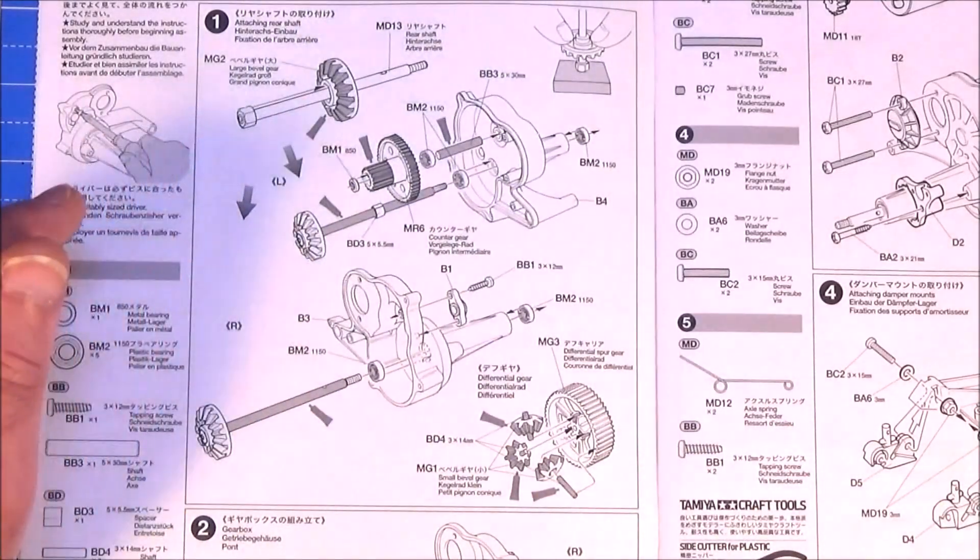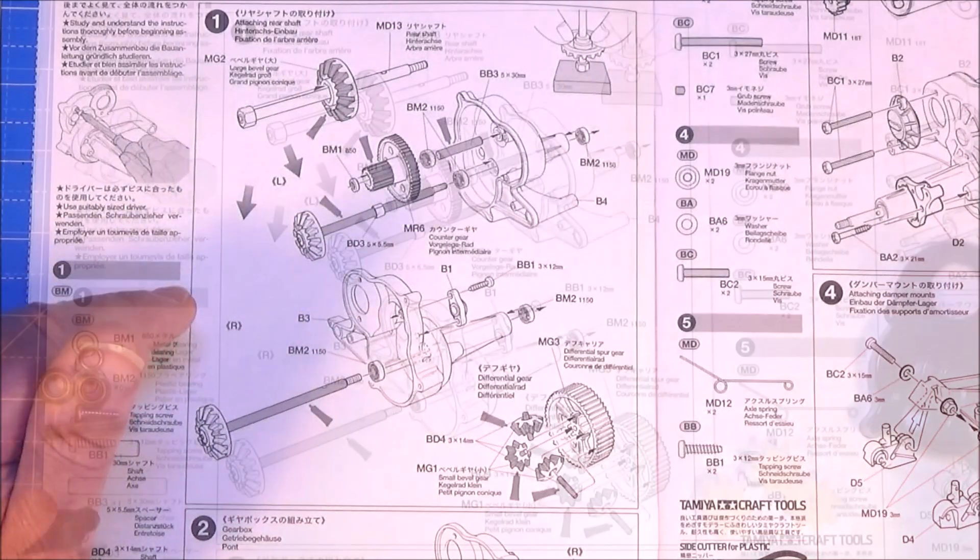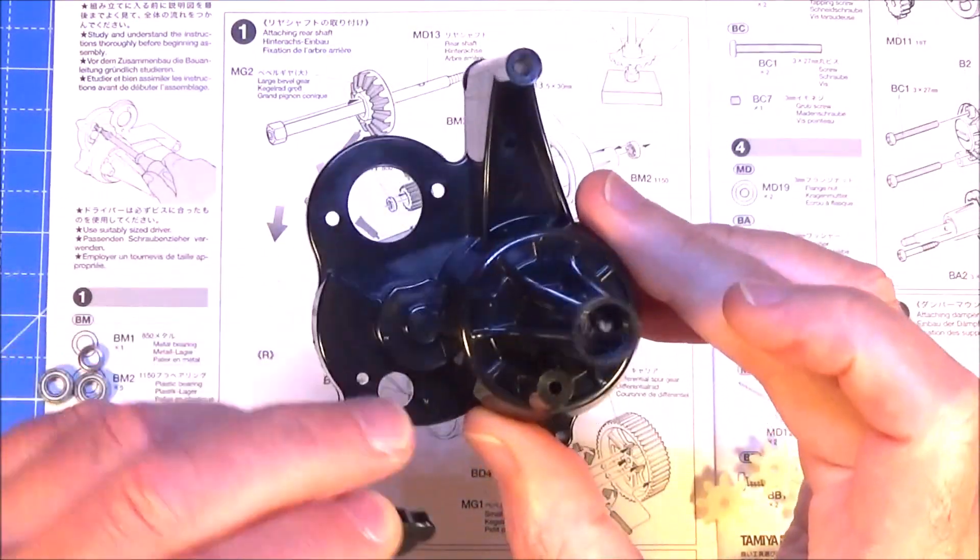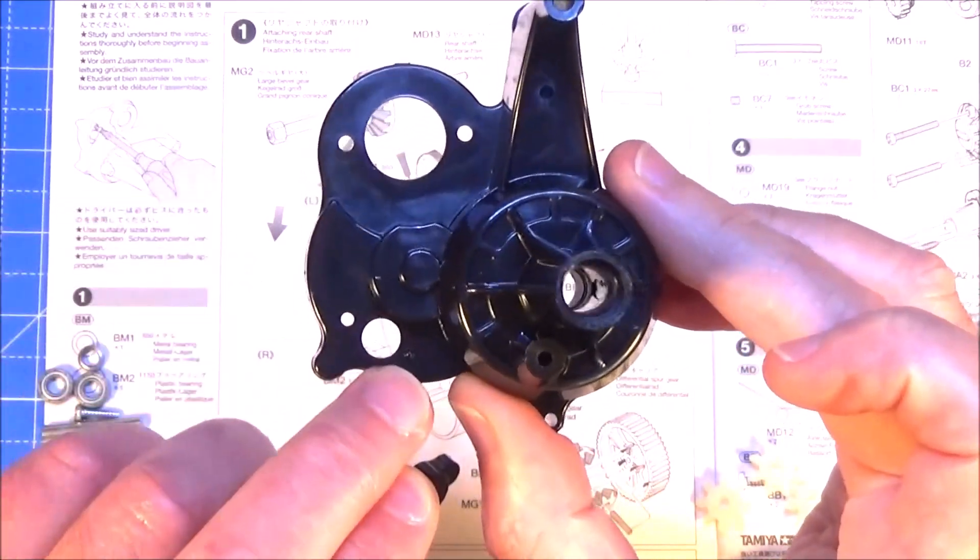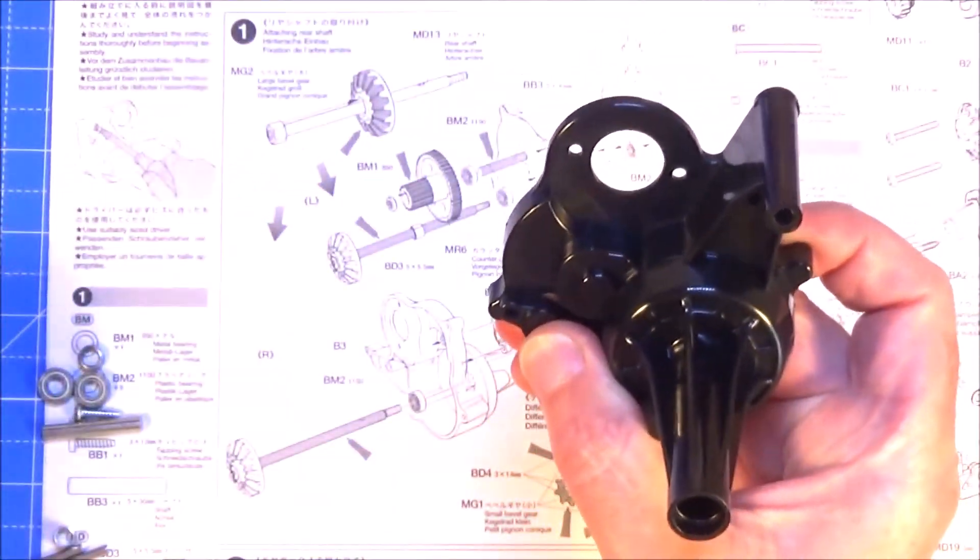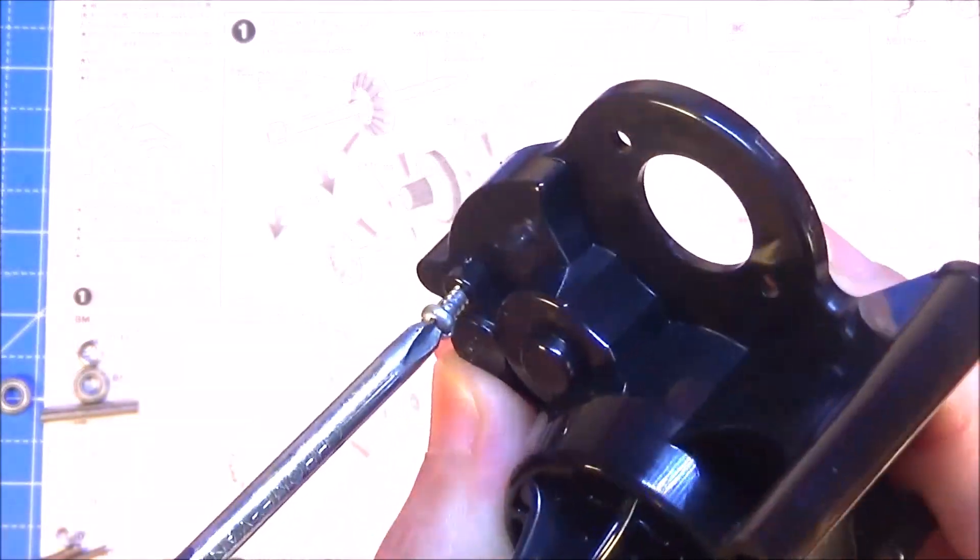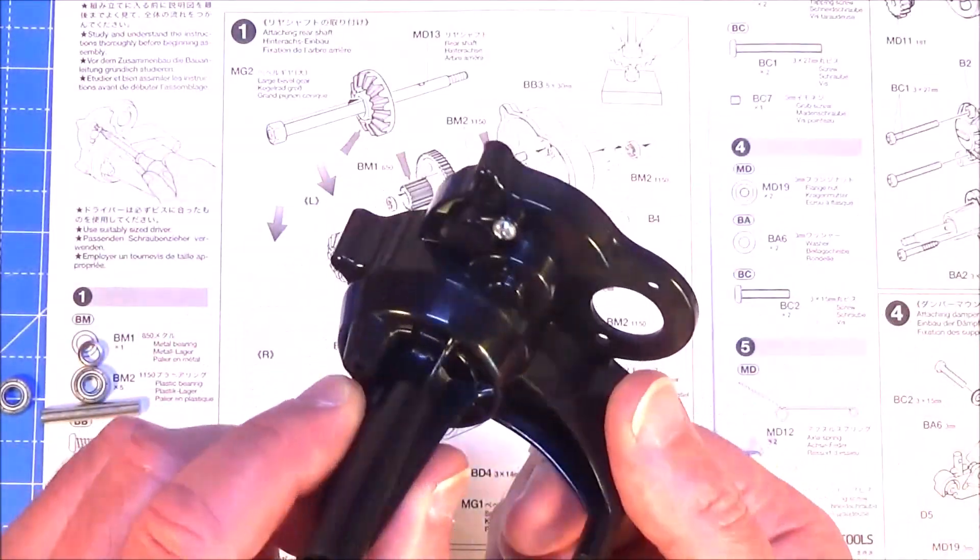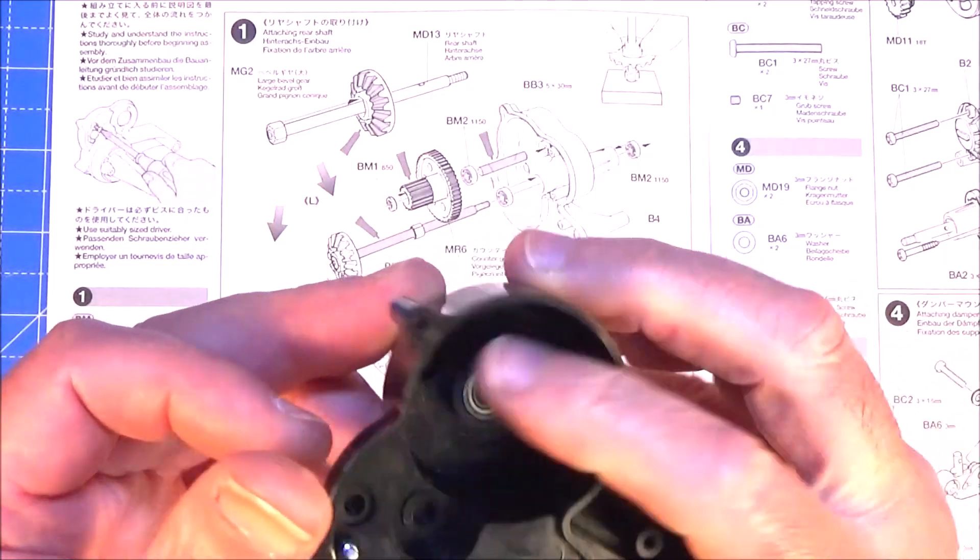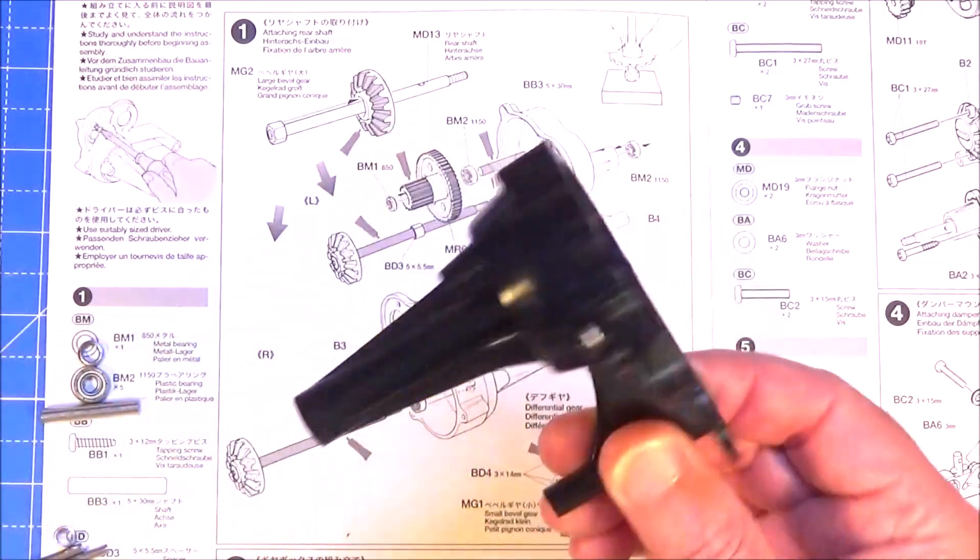Right let's just crack on with step one which is attaching the rear shaft or basically building up the gearbox and the differential. The first thing I'm going to do is put this little cap B1 onto this part of the gearbox so you can see there's a hole here you've got to cover this up. There's a little pin to locate one of these holes on and in the other hole goes a 3x12 self-tapping screw. So this is the right side of the gearbox case and I'm just going to pop in a couple of those 1150 bearings. One in there and one on the outside. So that's the right side ready to go.